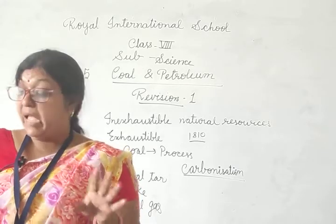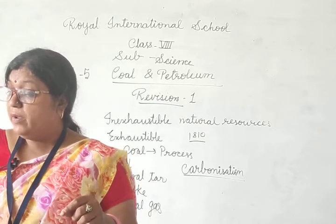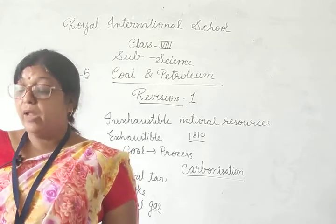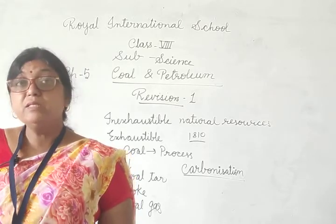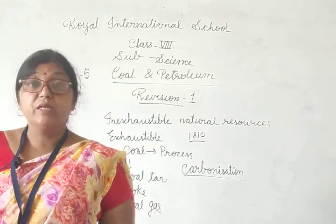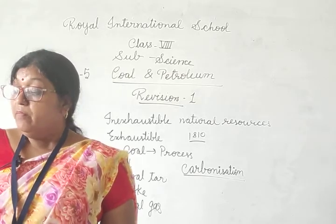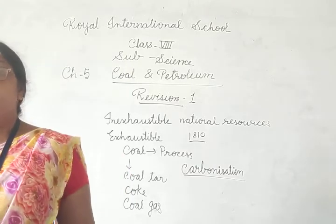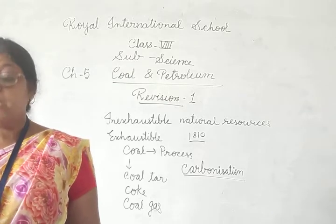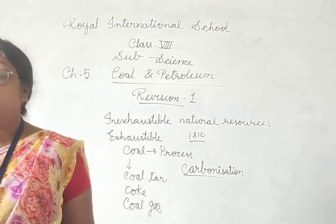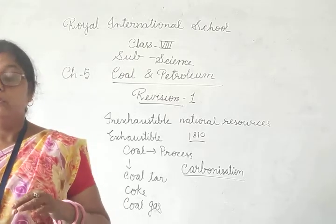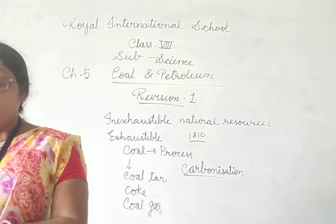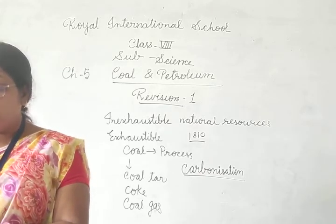Uses of coal tar — damar jo batata hai, wo foul-smelling, black-brown liquid hota hai. Jab isko fractional distillation mein dalte hai to useful chemicals milte hai: benzene, toluene, anthracene, phenol, naphthalene. These chemicals are widely used for making dyes, drugs, and explosive materials. Toluene se TNT banane mein kaam mein aata hai — jo ki atankwadi bhi istimail karte hai — bomb blasting mein bhi kaam mein aata hai. Benzene se BHC powder banane mein kaam mein aata hai, jo insecticides hai.